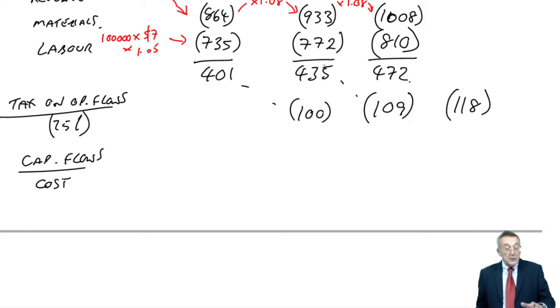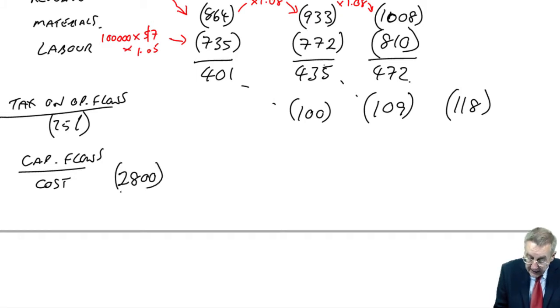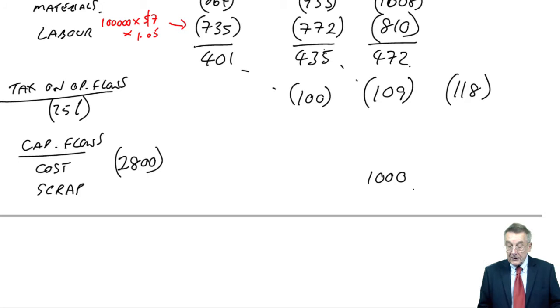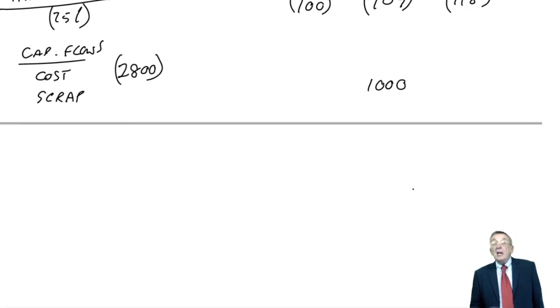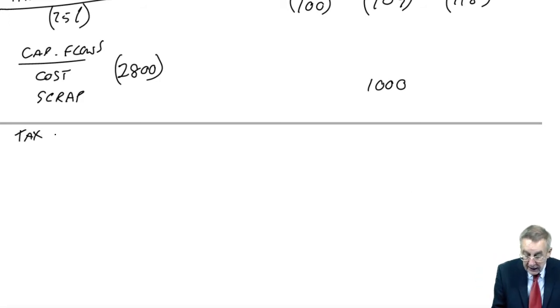Next, the capital flows. There's the original cost. Remember, I'm working in thousands. So it was 2.8 million, effectively an outflow of 2,800 at time 0. And is there any scrap? Yes, there is. Third line of the question. It'll last three years and then have a scrap value of a million. So at time 3, an inflow of a thousand. So far, we've ignored capital allowances. So like before, we're going to have to calculate the tax saving on capital allowances.